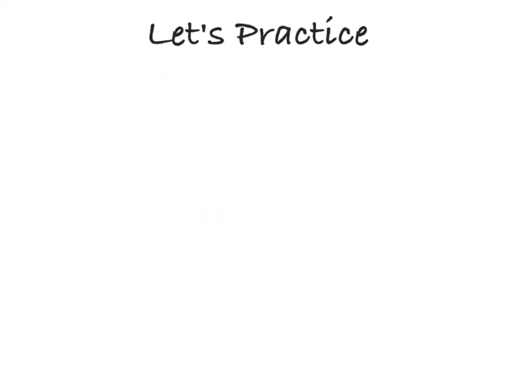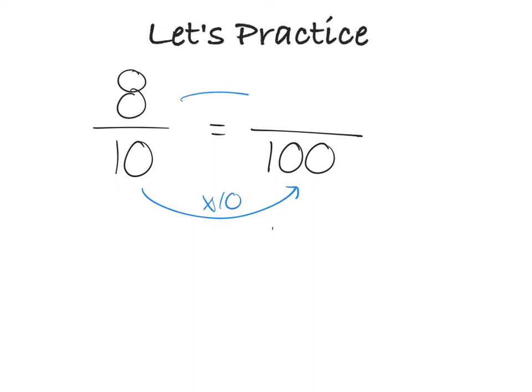Okay. I'm going to give you a problem. I want you to pause the video and try this on your own. What if I had 8 tenths? What would that be equivalent to if the denominator is out of 100? Pause the video and then come back when you're done. So hopefully you saw that once again, this is times 10. So I would have to do times 10. So this would be out of 80.